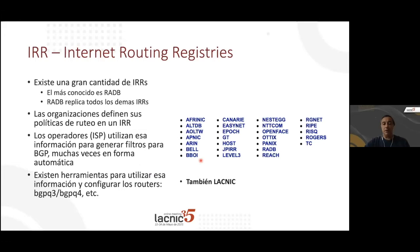Internet Routing Registries are text-form databases that contain information on the routing policies of organizations, defined using objects in those databases. This is something that has been in place for quite a number of years, and there are many IRRs in the world. The most famous one is RADB, but there are many more. LACNIC has its own IRR since last year. What an organization registers in these databases, other ISPs can use to generate BGP filters automatically using available tools.